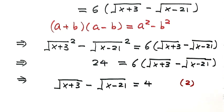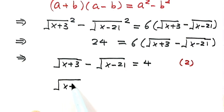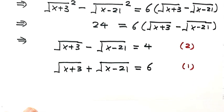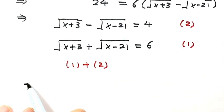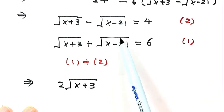Now let's write down equation 1, the original equation: square root of x plus 3, plus square root of x minus 21, equals 6. Now let's do equation 1 plus equation 2. Adding them together, we get 2 times square root of x plus 3 — the square root of x minus 21 terms cancel — and the right hand side equals 10.